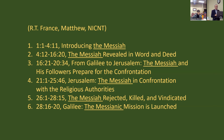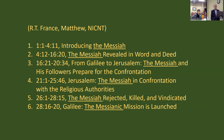The next section, number three, is 'From Galilee to Jerusalem — The Messiah and His Followers Prepare for the Confrontation.' This is the 'who do people say that I am?' section — 'You're the Christ, the Son of the living God' — and Jesus starts talking about his death as they're on their way to Jerusalem. Then section four is 'In Jerusalem,' starting with the triumphal entry on Palm Sunday, chapter 21 verse one.